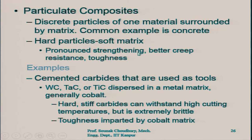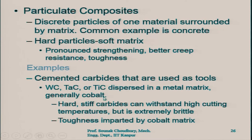Pronounced strengthening, better creep resistance, and toughness — examples are the cemented carbides used as tools: tungsten carbide, tantalum carbide, or titanium carbide dispersed in a metal matrix. That metal matrix is generally cobalt. They make very hard, stiff carbides that can withstand high cutting temperatures, but they are extremely brittle and cannot withstand shock load. Toughness is imparted by the cobalt matrix.